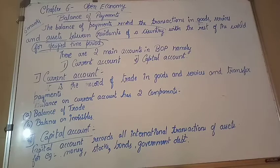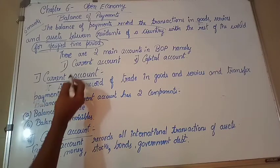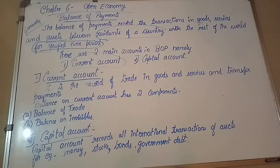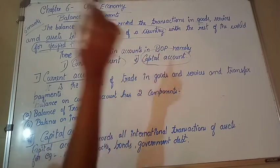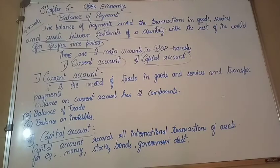In BOP, we say that there are two main accounts. One is our current account, which we have already studied in the previous videos. The second one is capital account. So, totally, we have two accounts in BOP: one is current account, another one is capital account.